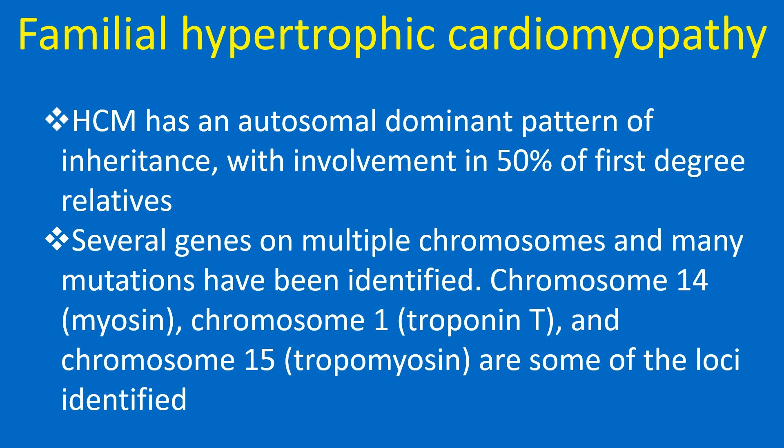Familial hypertrophic cardiomyopathy has an autosomal dominant pattern of inheritance with involvement in 50% of first-degree relatives. Several genes on multiple chromosomes and many mutations have been identified, including Chromosome 14 myosin, Chromosome 1 troponin T, and Chromosome 15 tropomyosin.